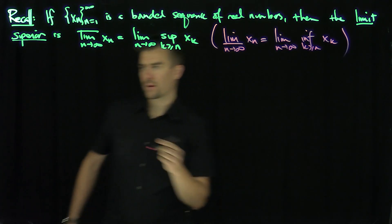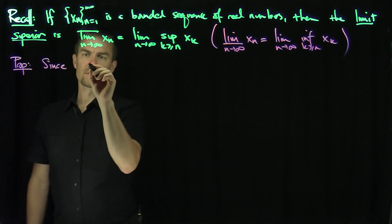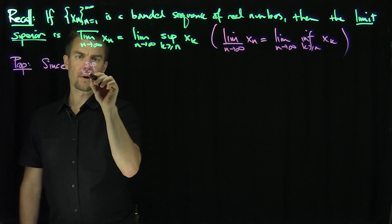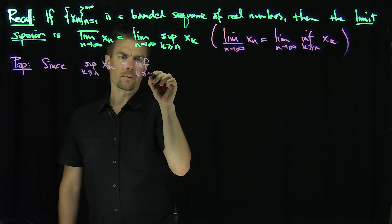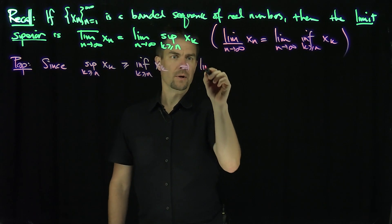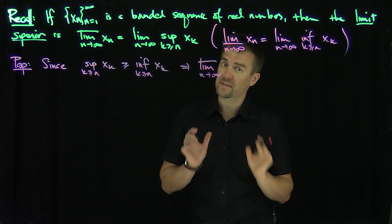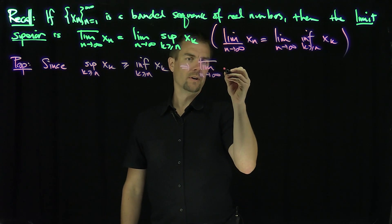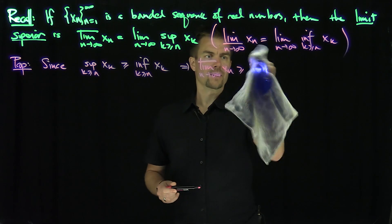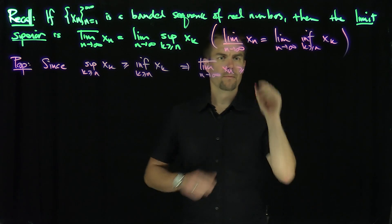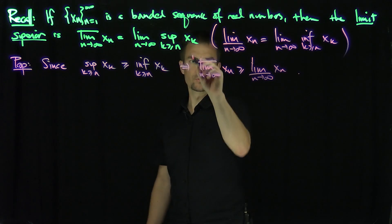One elementary property of these things: since the sup over k ≥ n of x_k is always greater than or equal to the infimum over k ≥ n of x_k trivially, this implies — as we proved in a previous video — that the lim sup and lim inf always exist even if the ordinary limit does not. And the lim sup as n goes to infinity of x_n is always greater than or equal to the lim inf as n goes to infinity of x_n. So lim sups are always bigger than lim infs.